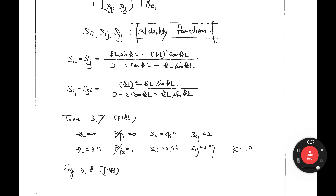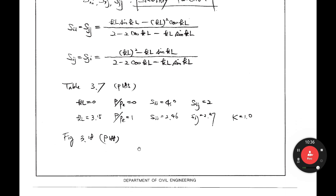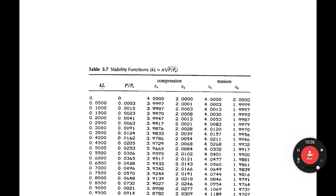If you see Table 3.7 in your textbook, page 185 — let's look at this table. If KL equals 0, that means P equals 0, because K equals the square root of P over EI. In that case SII is 4 and SIJ is 2, the same values you already know.